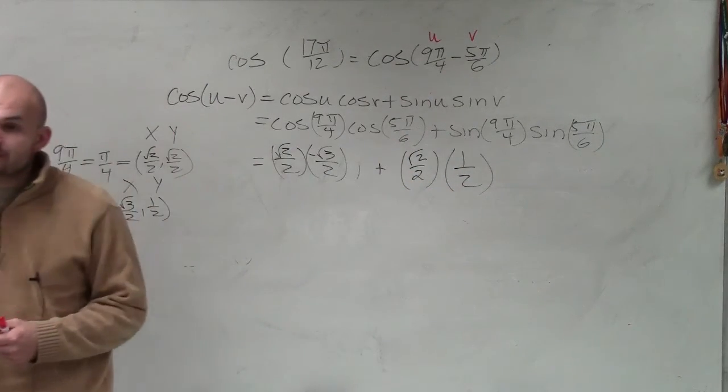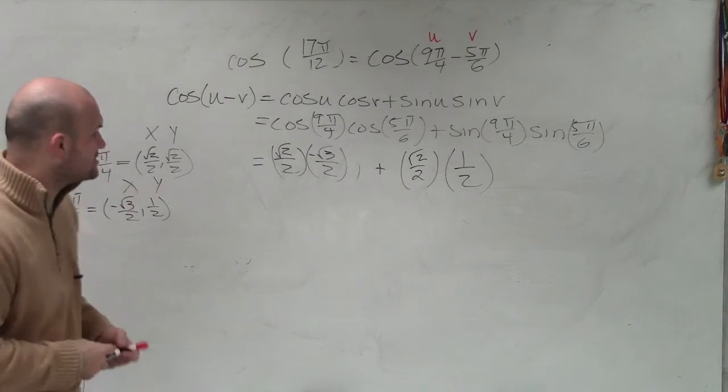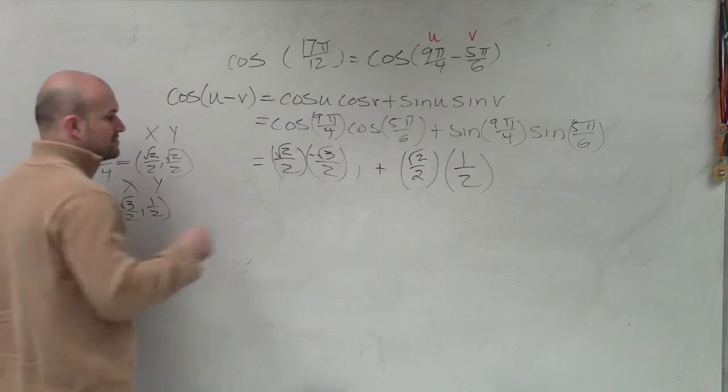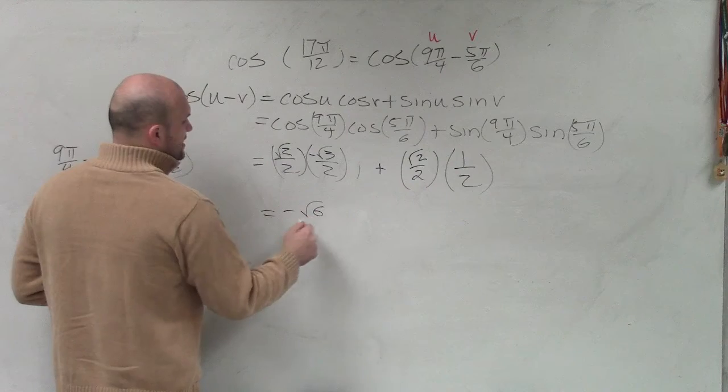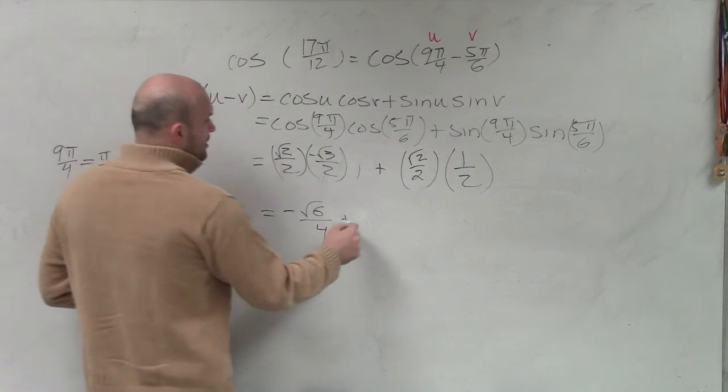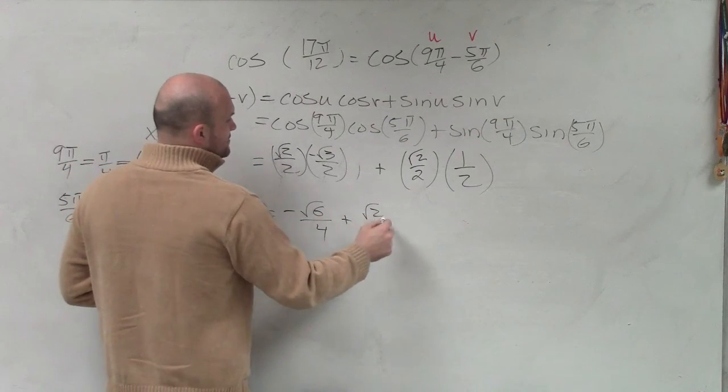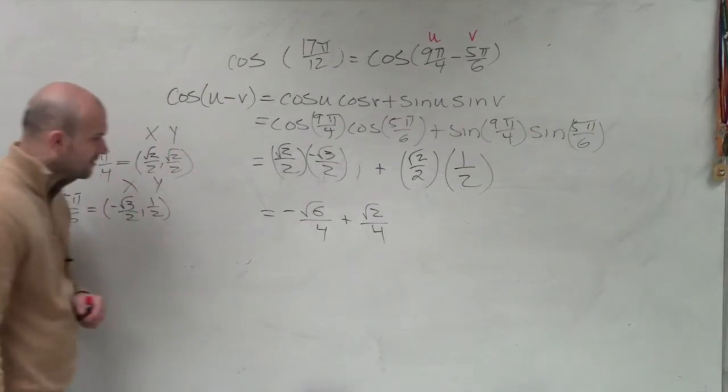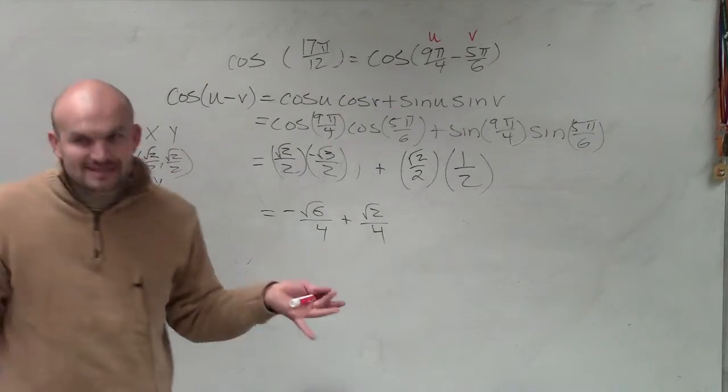So now, we just need to simplify. To simplify, we need to multiply across. Square root of 2 times negative square root of 3 is going to be negative square root of 6 over 4 plus square root of 2 times 1 is square root of 2 over 4. All right, yes, that is the correct answer right there.